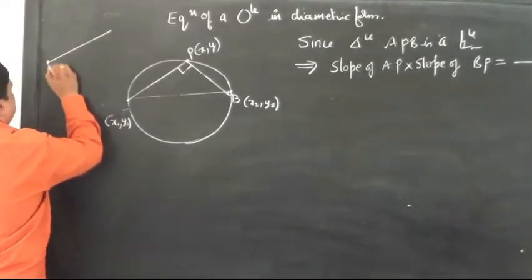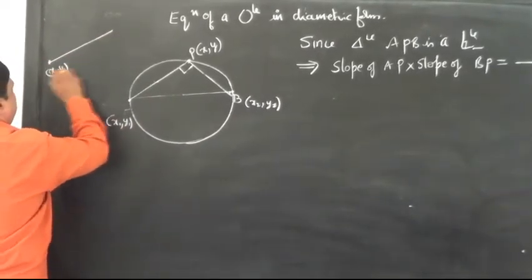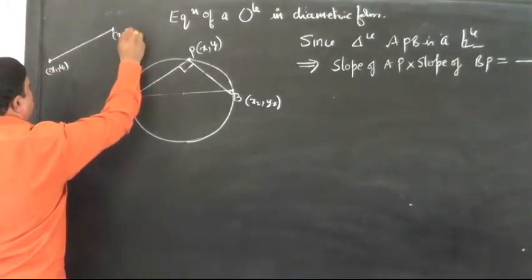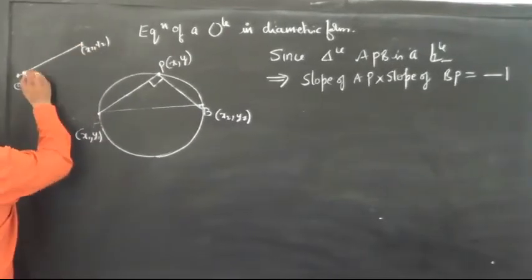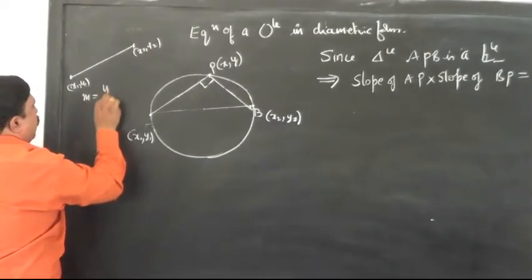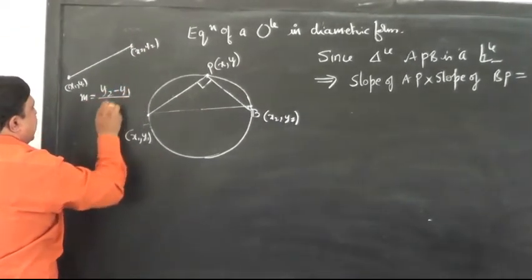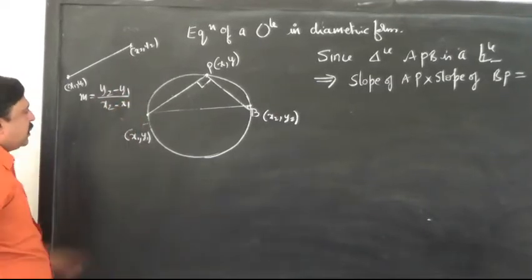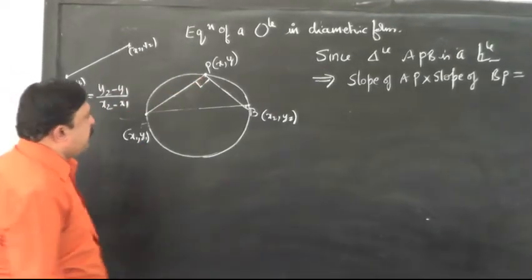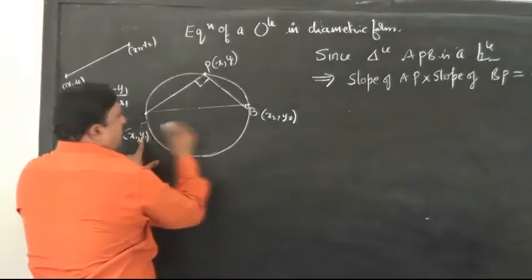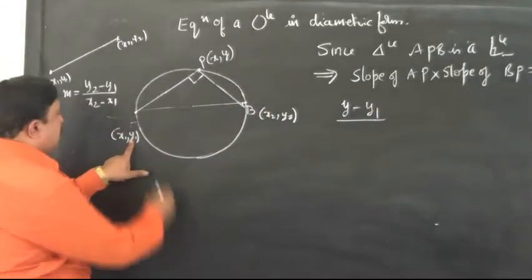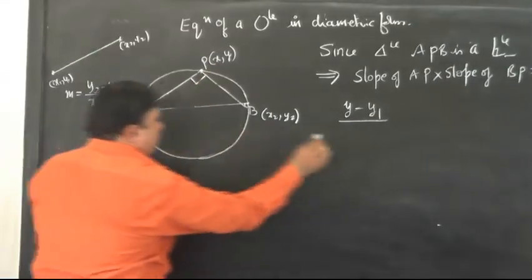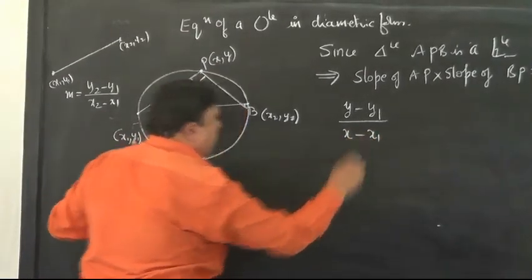If you have a line joining X1, Y1 and X2, Y2, in the previous class we have derived that the slope of such a line is going to be Y2 minus Y1 divided by X2 minus X1. Similarly, the slope of AP gives Y minus Y1, that is the difference in the corresponding coordinates, divided by X minus X1.